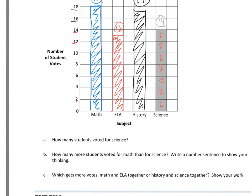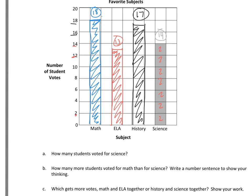A says, how many students voted for science? Well, I did that already. That's 14. And I just counted by twos going all the way up. So 14 students voted for science.